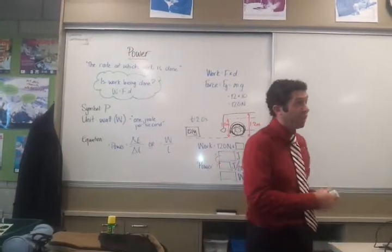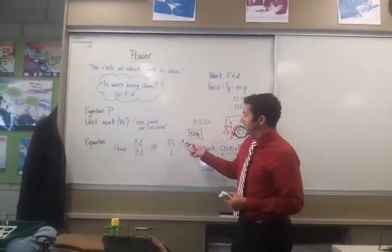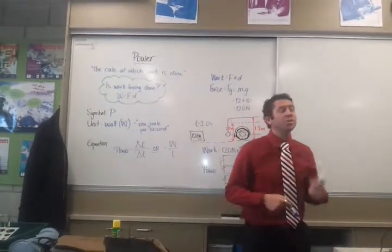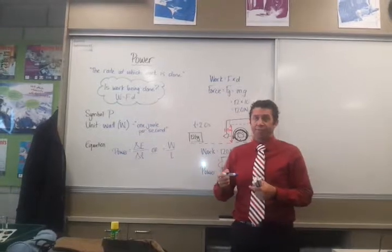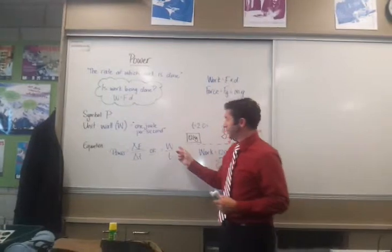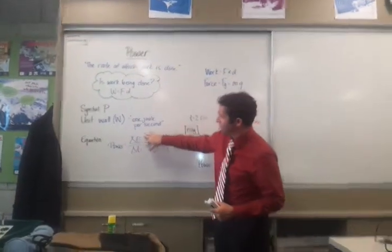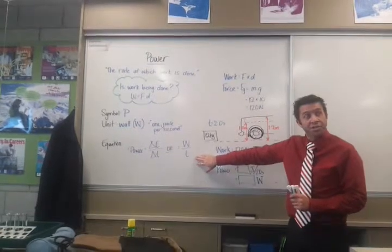So that actually tells you what the equation must be, which again is given. One thing I would like to point out quickly here with the W over T is W is not weight, it's work. Remember that the symbol for weight is F with a little subscript G. So don't get confused with those two. So, it's either the change in energy over the change in time, or the work being done over a change in time.